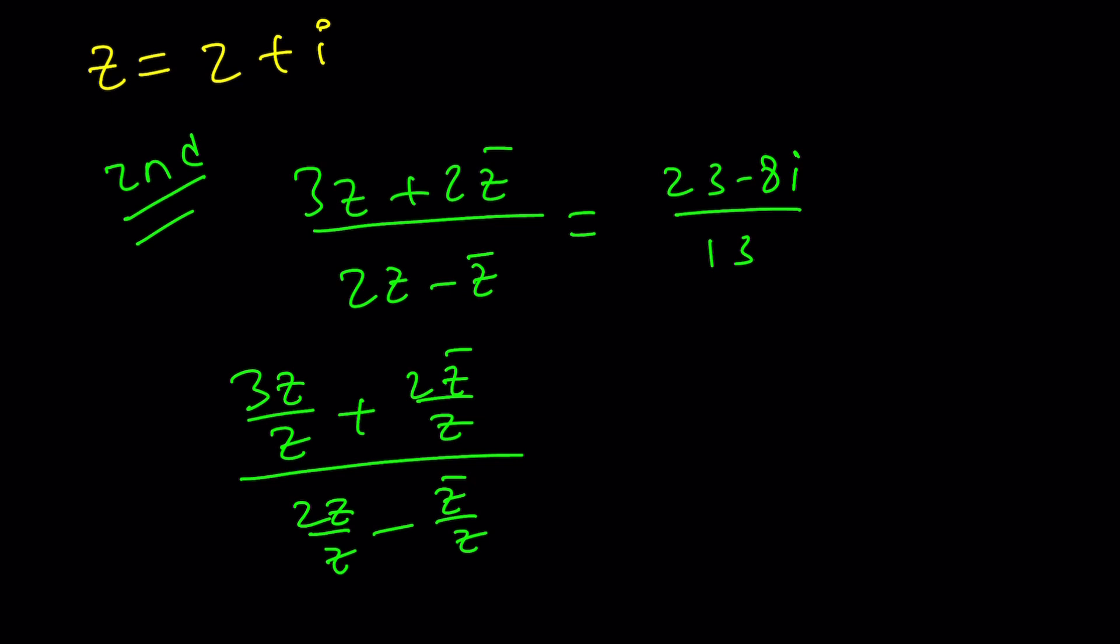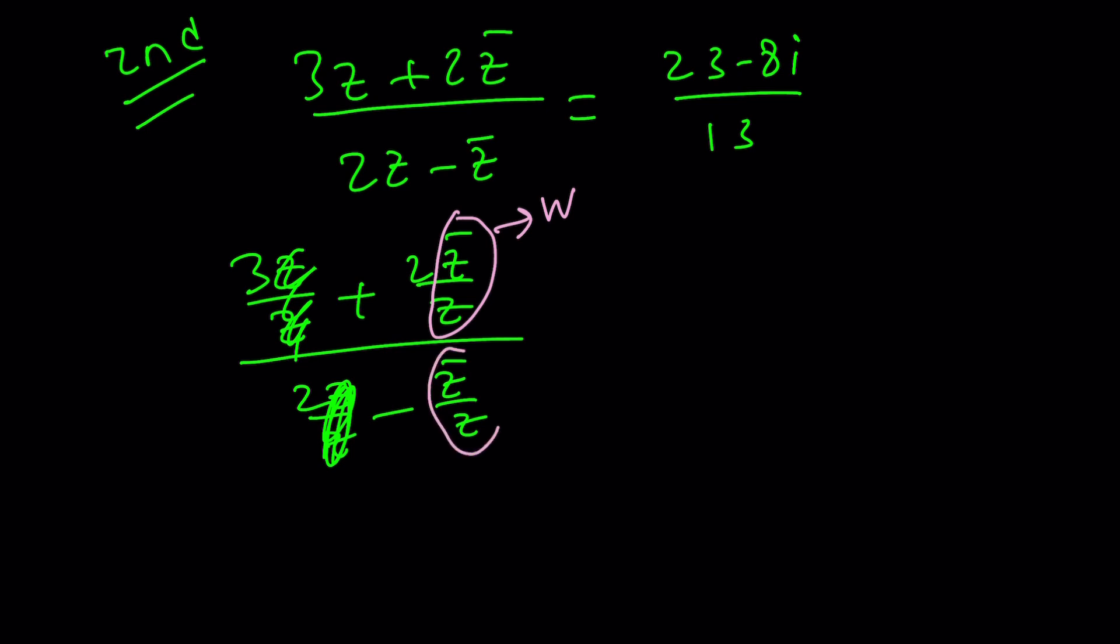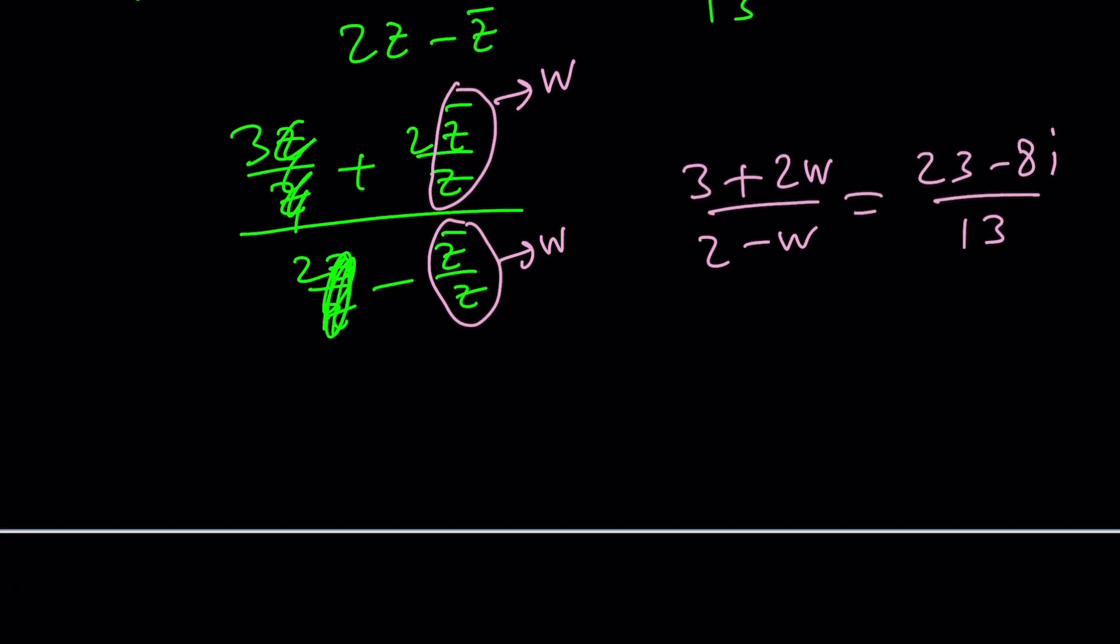And of course right hand side is going to stay the same. z's cancel out. And if you call this like a ratio. Let's just call this maybe w. Complex number. So this will be w as well. And from here we're going to get 3 plus 2w divided by 2 minus w equals this number. And guess what? You can solve for w and then once you solve for w that'll give you what z bar over z. Let's say you got a number from here. Complex number. And then you can kind of solve for z from here. Anyways you can do the rest because this brings us to the end of this video.